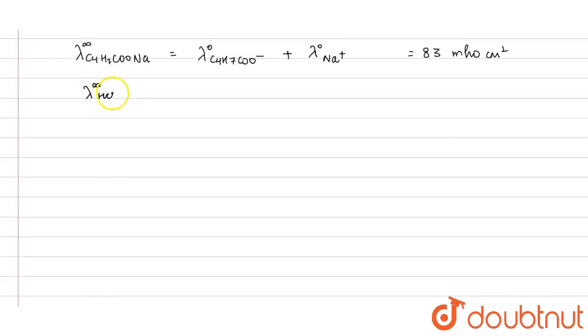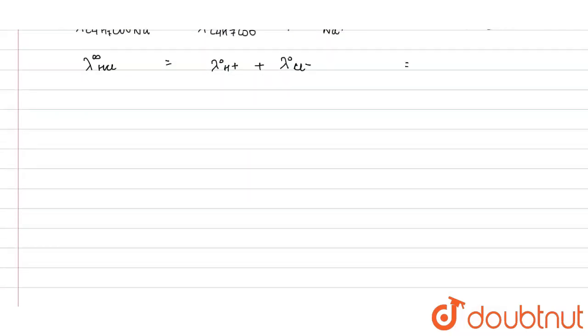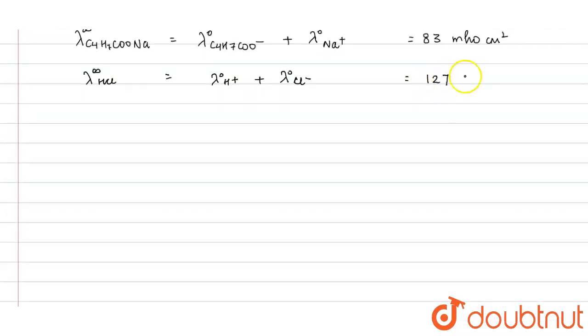For HCl it can be written as lambda naught H plus plus lambda naught Cl minus, and its value in the question given is 127 mho centimeter square. Now for NaCl...